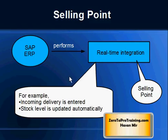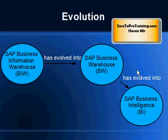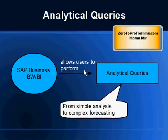On the flip side, we have a warehouse application. SAP created its warehouse application in 1997; it was called SAP Information Warehouse. With the passage of time, it evolved into SAP Business Information Warehouse, then SAP Business Warehouse (SAP BW), and that evolved into SAP Business Intelligence, also known as SAP BI.